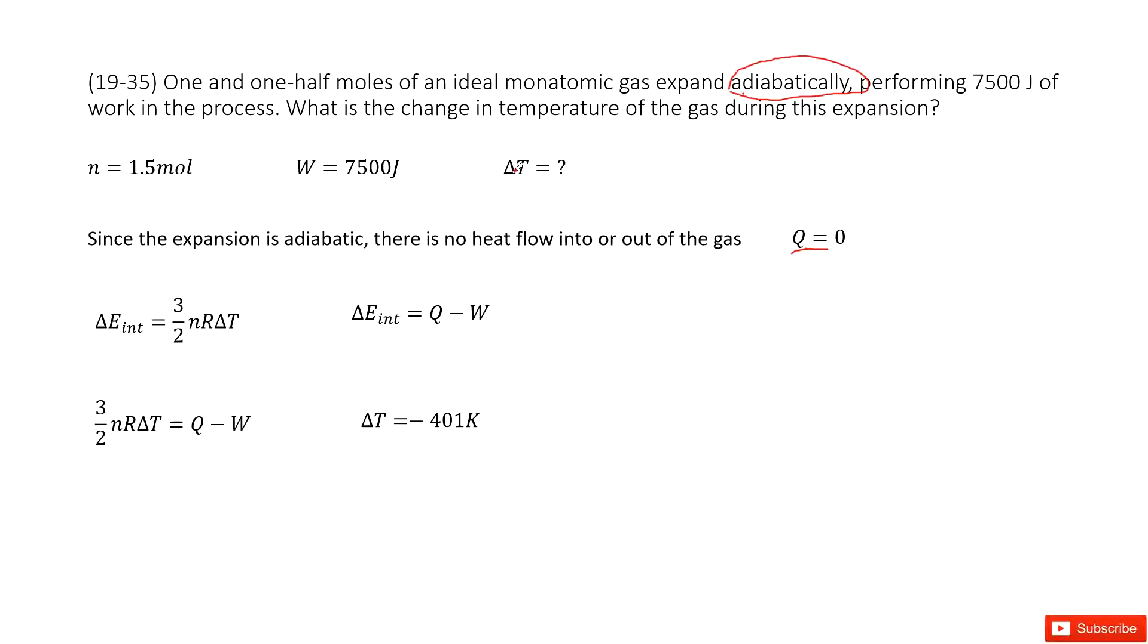Now we need to find T. So you have this quantity, this one, this one. How can we find T? We can consider the change in internal energy, delta E int. This is the definition for it: it is equal to 3 over 2 nRΔT.